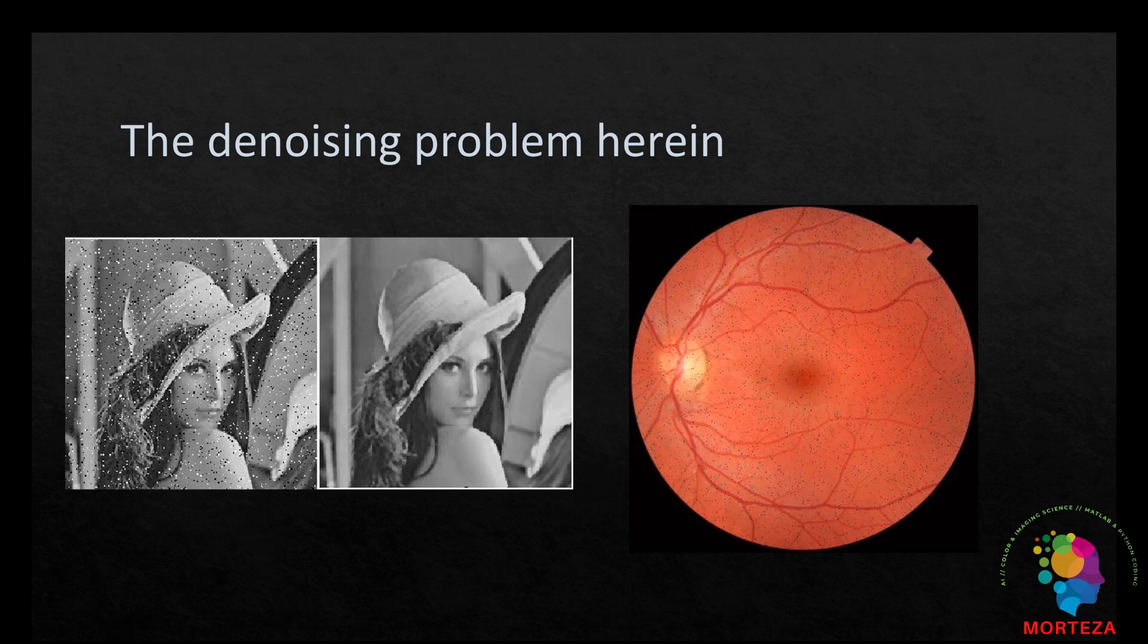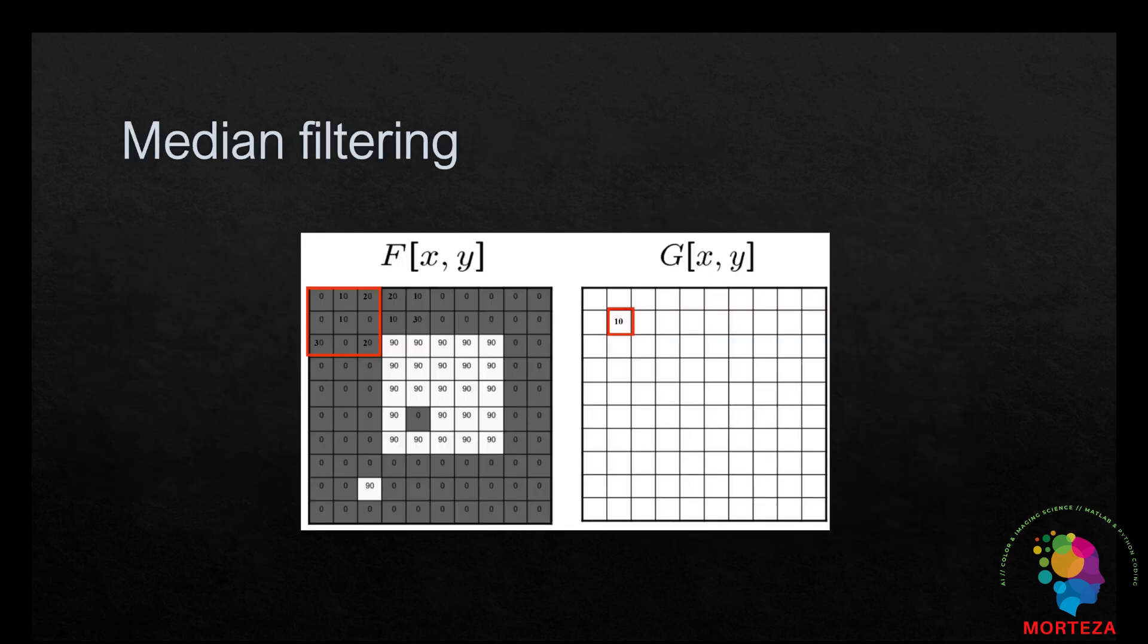Let's first quickly explain the median filters and their application in image processing. Median filtering is a non-linear digital filtering technique, often used to remove noise from an image or signal.